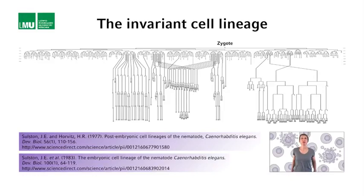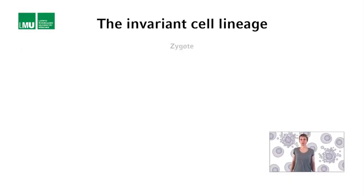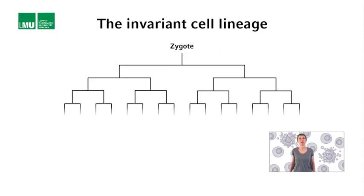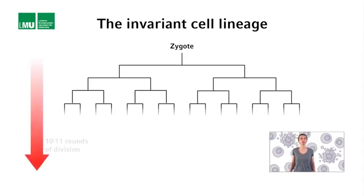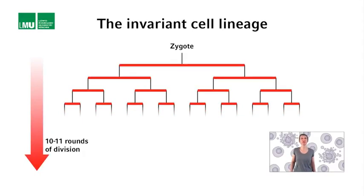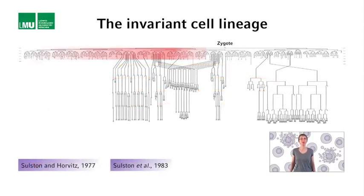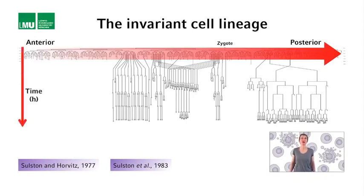The lineage starts at the top with the fertilized oocyte, the zygote, which divides to give rise to two daughter cells, which then divide again, and so on. There are 10 to 11 rounds of cell divisions altogether. Vertical lines represent individual cells, and horizontal lines represent individual cell divisions or mitoses. The x-axis represents the axis running from the anterior to the posterior of the animal, from head to tail, and the y-axis represents time in hours.